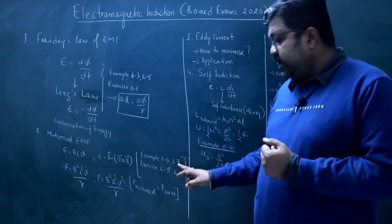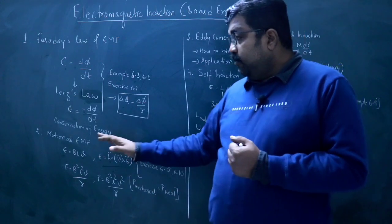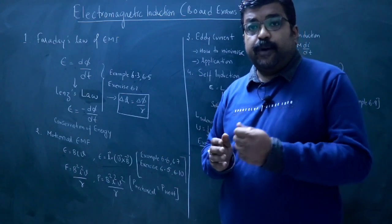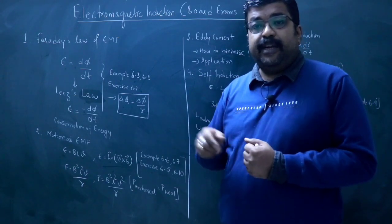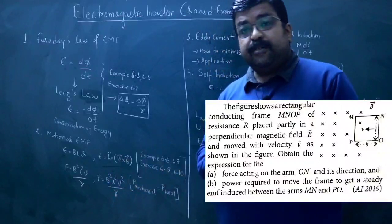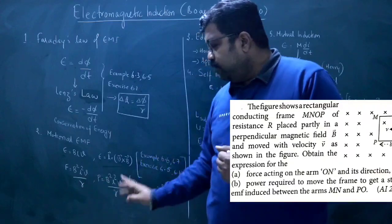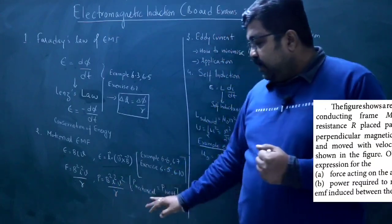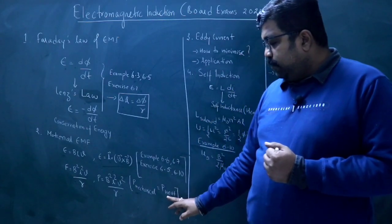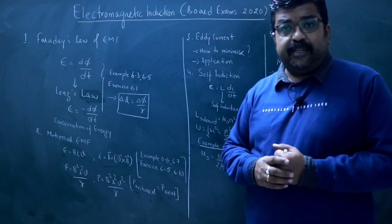Then there are some examples in Motional EMF. Example 6.6 and 6.7. In exercise, there are 2 questions, 6.5 and 6.10. Then after the expression, you have to derive the expression for the force required to move the conductor in a magnetic field. The expression is B square L square V divided by R. Then the expression of power is force into velocity. So B square L square V square divided by R. Then there is an inference here that mechanical power required to move the rod in the magnetic field is equal to the power dissipated as heat.